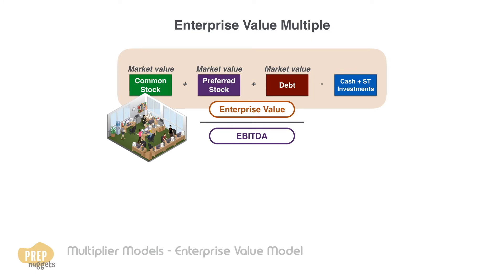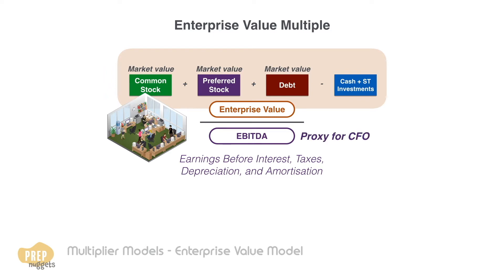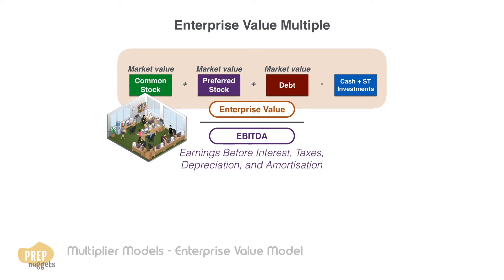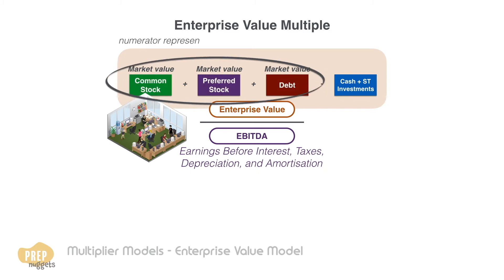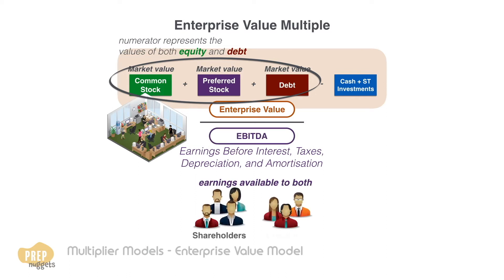EBITDA is the earnings of the company before interest, taxes, depreciation and amortisation are subtracted. It's often regarded as a proxy for operating cash flow because it excludes depreciation and amortisation. Because the numerator represents the values of both equity and debt, it should be compared to earnings available to both shareholders and creditors. That is why earnings before interest is used, as interest is payments to creditors.